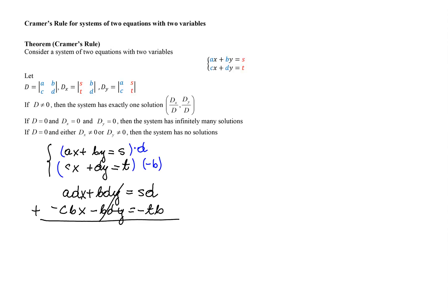Factoring out X from both terms, we have X(AD - CB) = SD - TB.